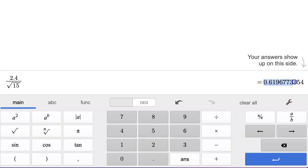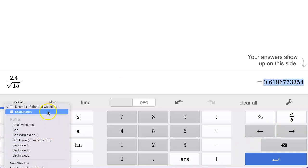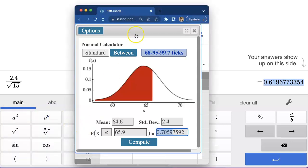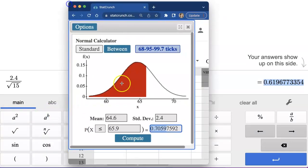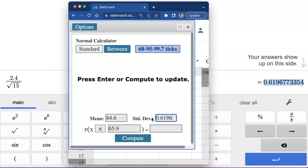So this number is the standard error and that is the number that you will use to find the probability this time. So instead of that population standard deviation of 2.4, enter that number that we just got from the calculator 0.6196.